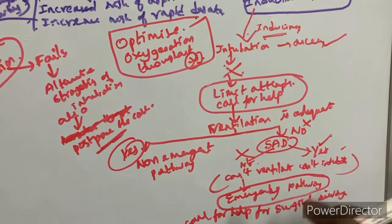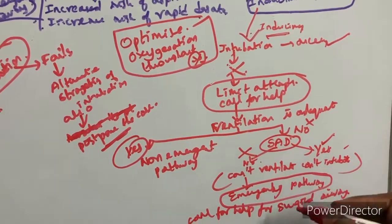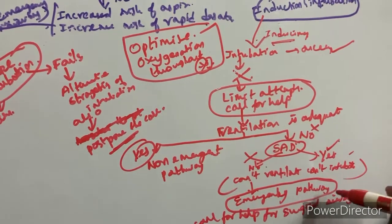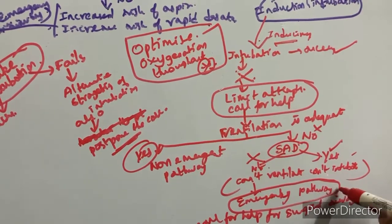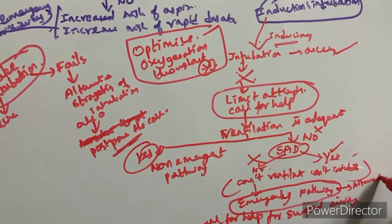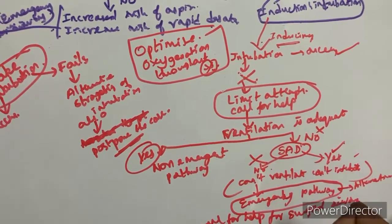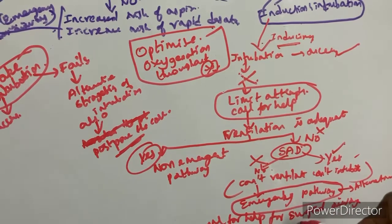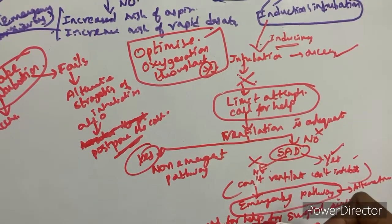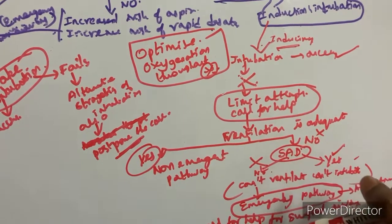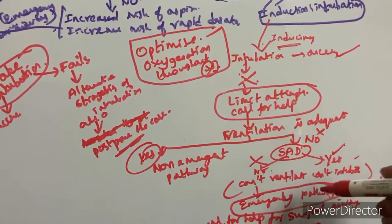On the emergent pathway, call for help for surgical airway options such as needle cricothyroidotomy or surgical tracheostomy. Consider alternative emergency procedures. If access is gained, proceed; if not, proceed to surgical airway — either tracheostomy or cricothyroidotomy — to maintain ventilation, with surgical tracheostomy as the final option.